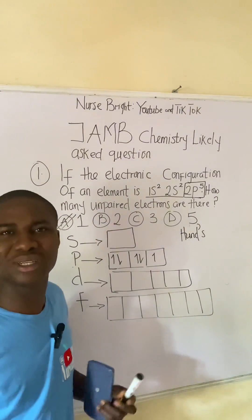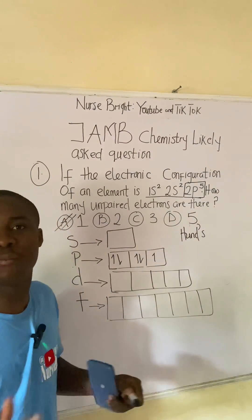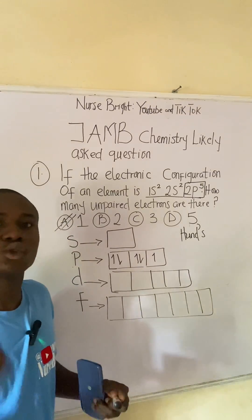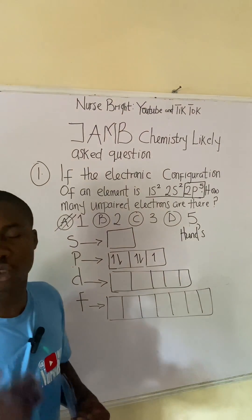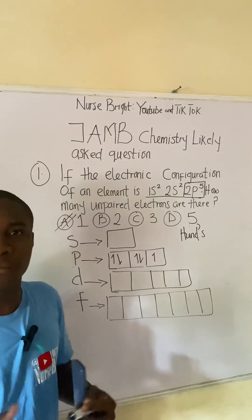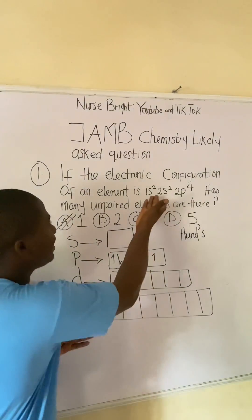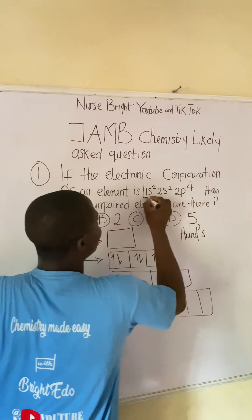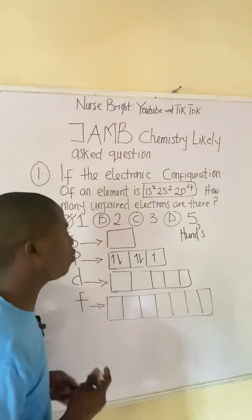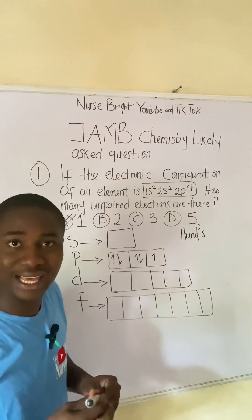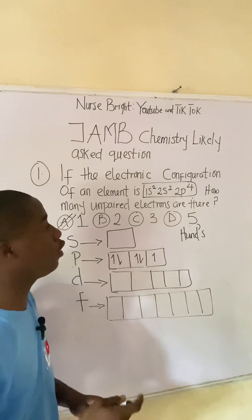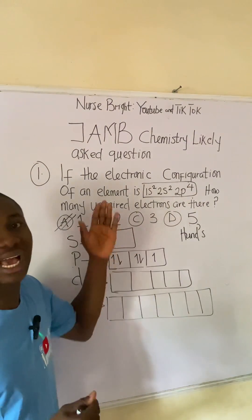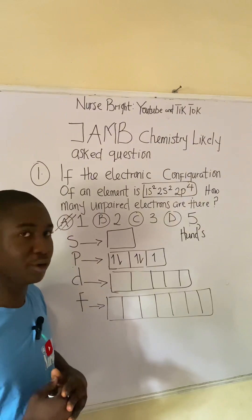The answer becomes option A — one unpaired electron. I believe you understand how questions under this aspect are solved, without stress, not difficult. Now I'll give you a practice question: I've changed the electronic configuration, so do well to find the number of unpaired electrons and provide the answer in the comment section.